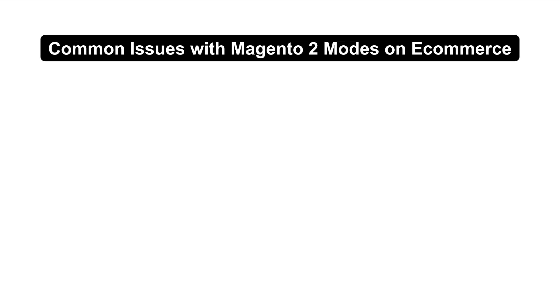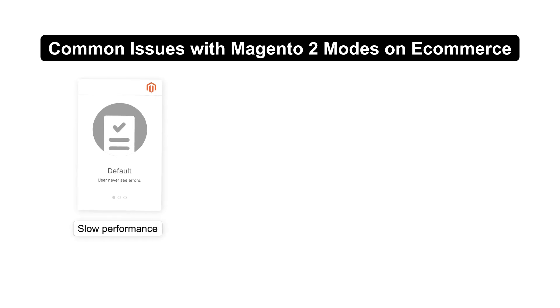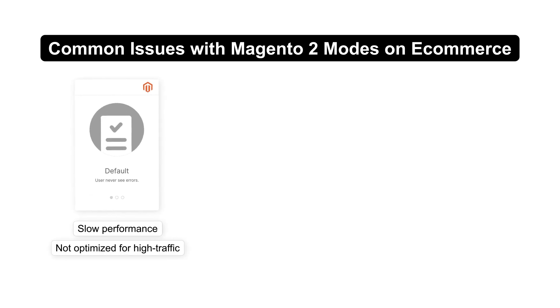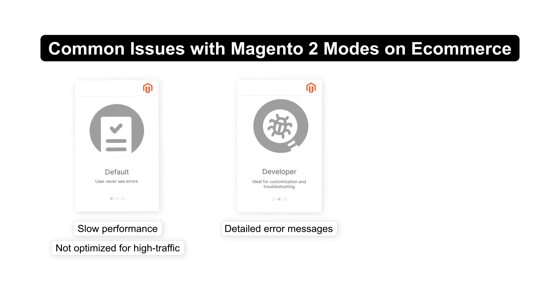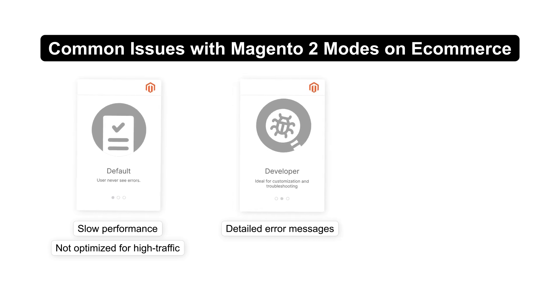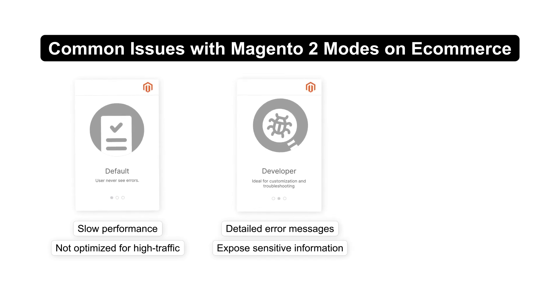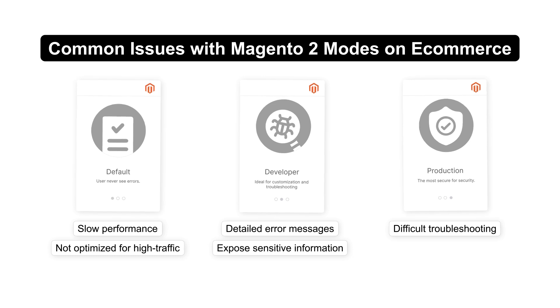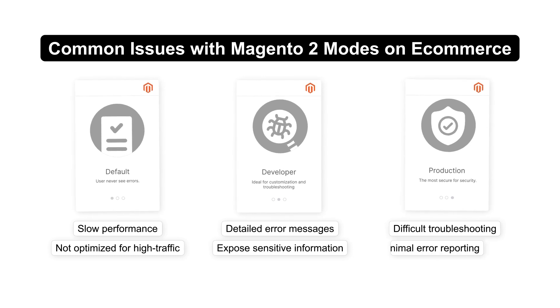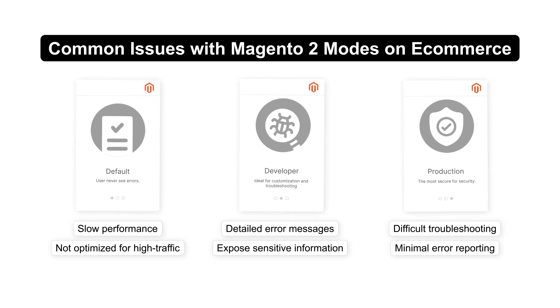Now let's understand the common issues with Magento 2 modes in e-commerce. Default mode may experience slow performance and is not optimized for high-traffic environments. Developer mode can show detailed error messages that might expose sensitive information. Troubleshooting in production mode can be challenging due to minimal error reporting.